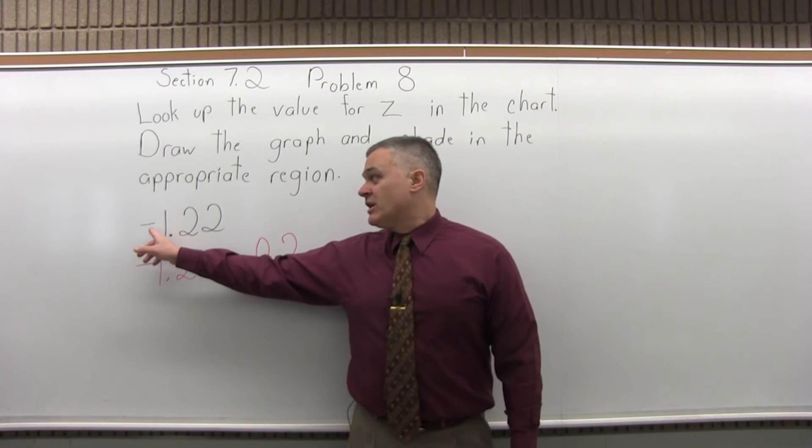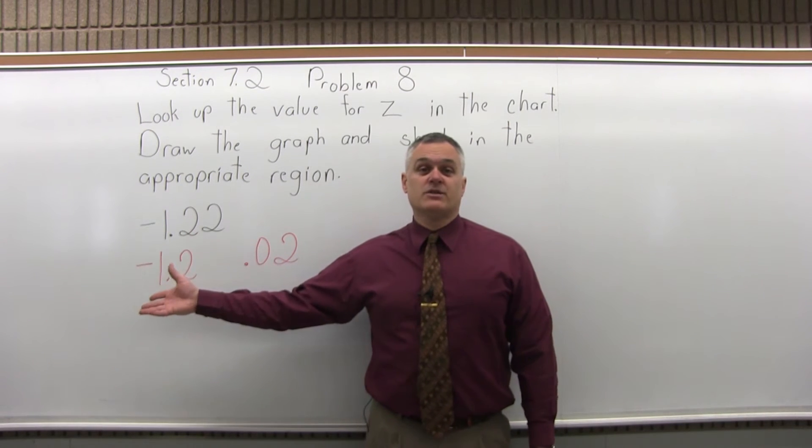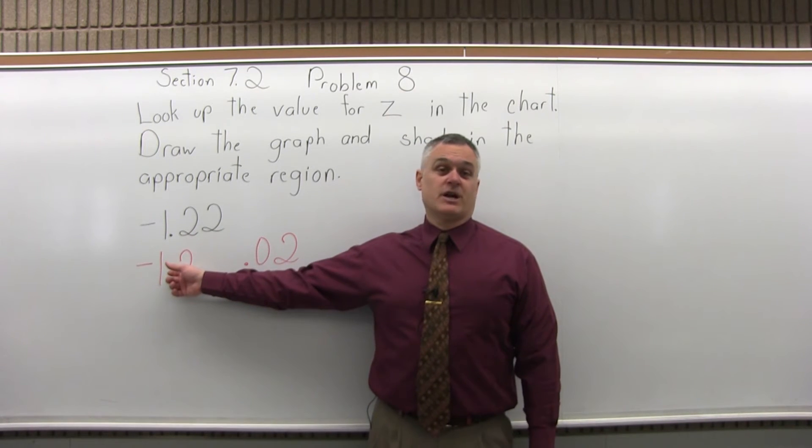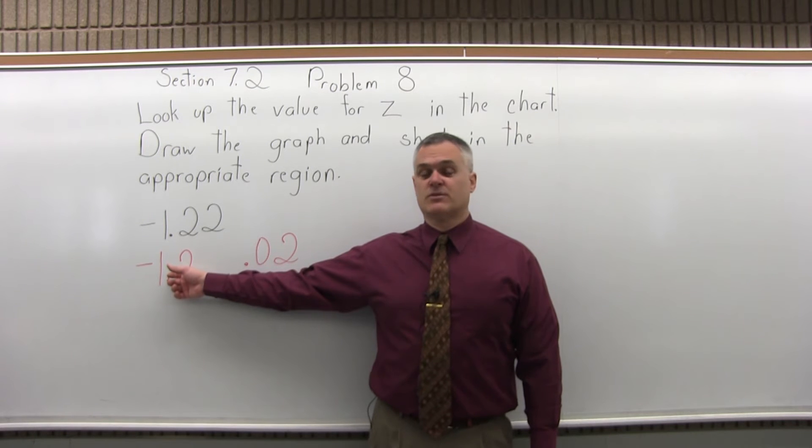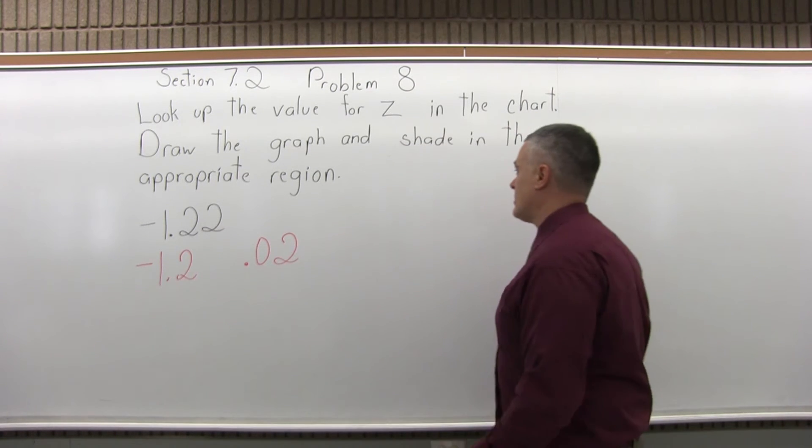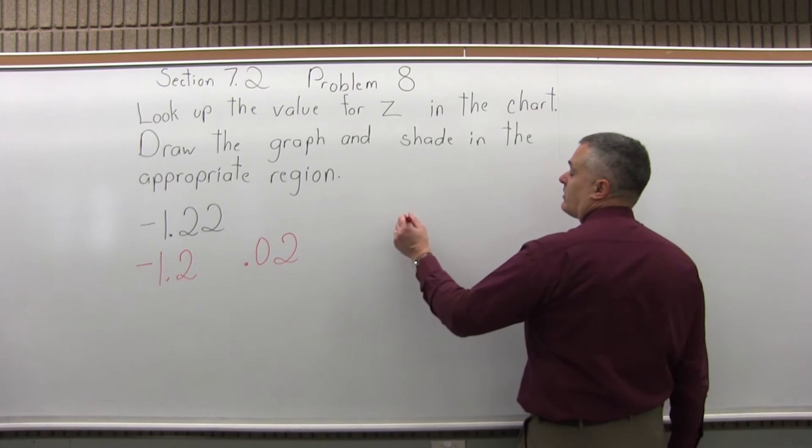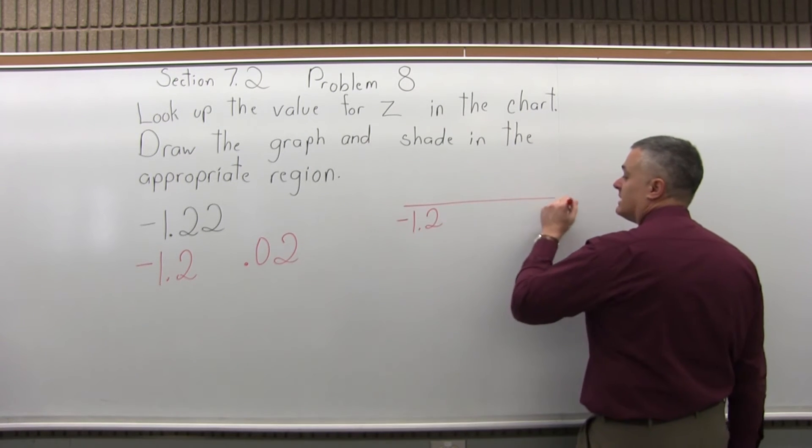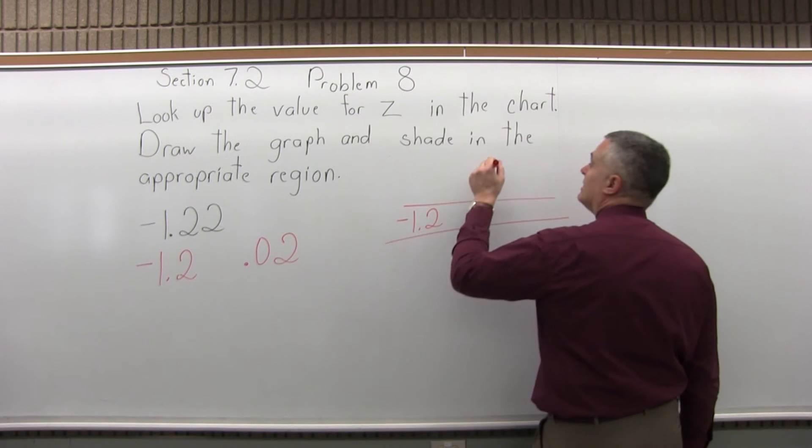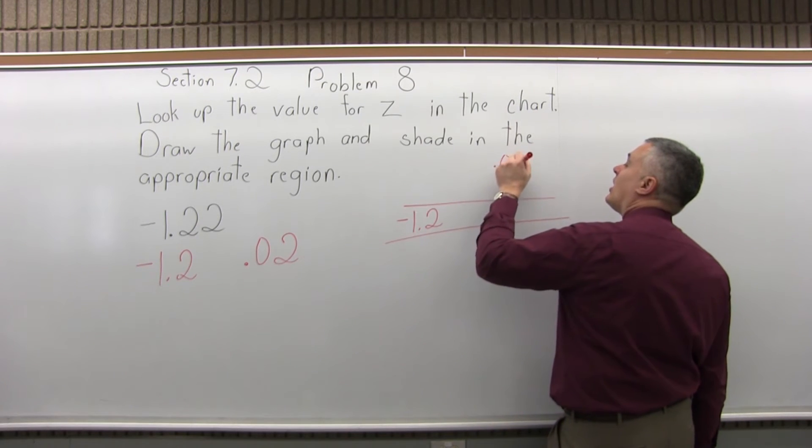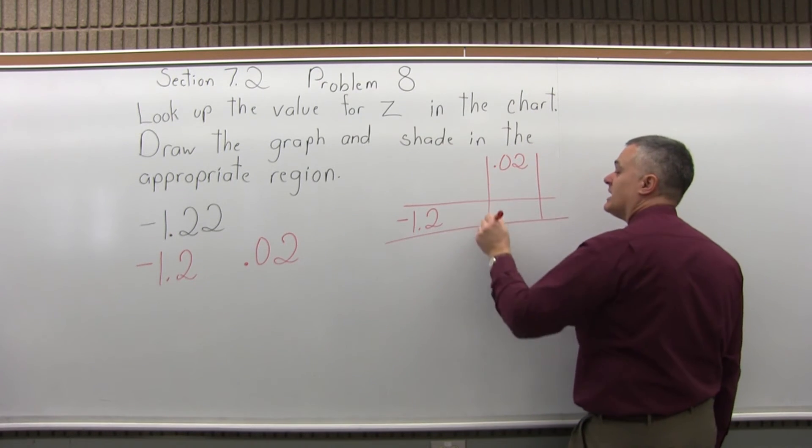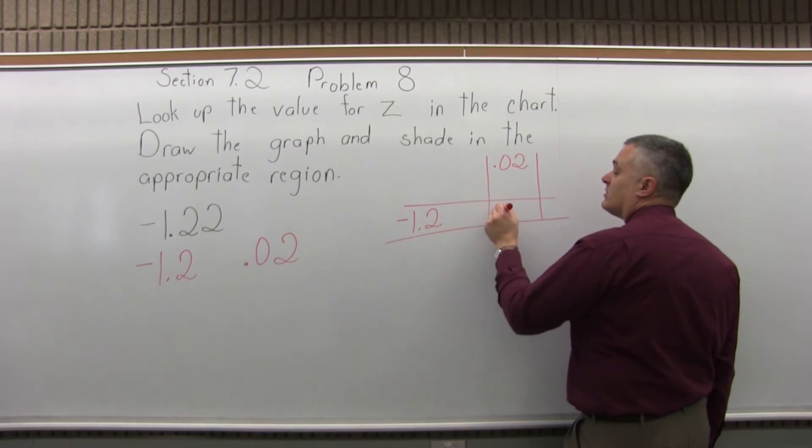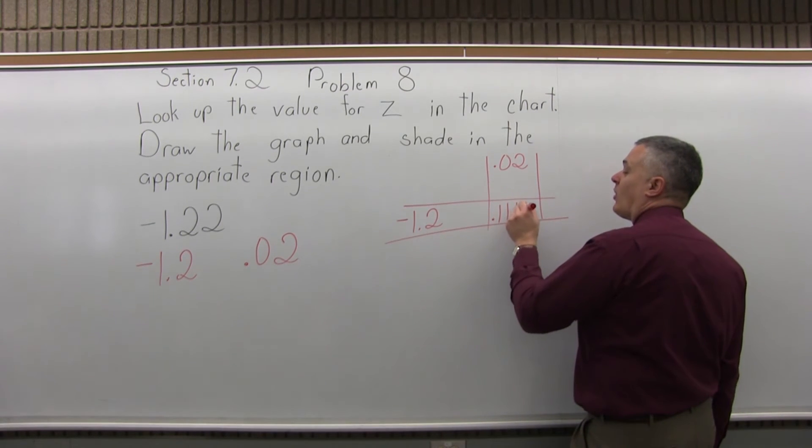Now, the chart has two pages, one for positive values, one for negative values. This value is negative, negative 1.22. So make sure you're on the negative page in the chart. So for step 4, we will go to the negative 1.2 row of the chart. See where it intersects with the .02 column of the chart, again on the negative page. And where they intersect will be .1112.